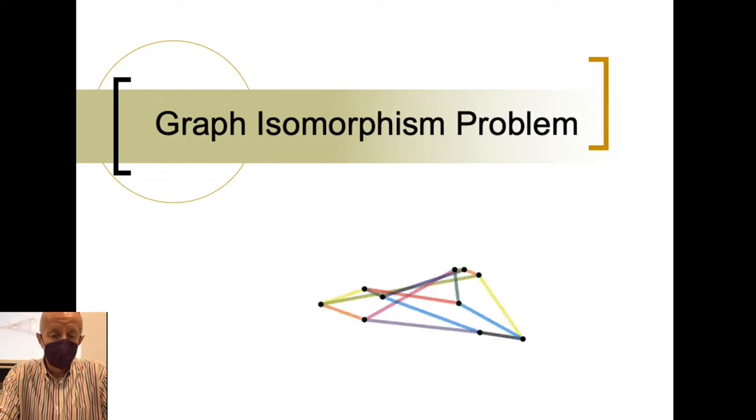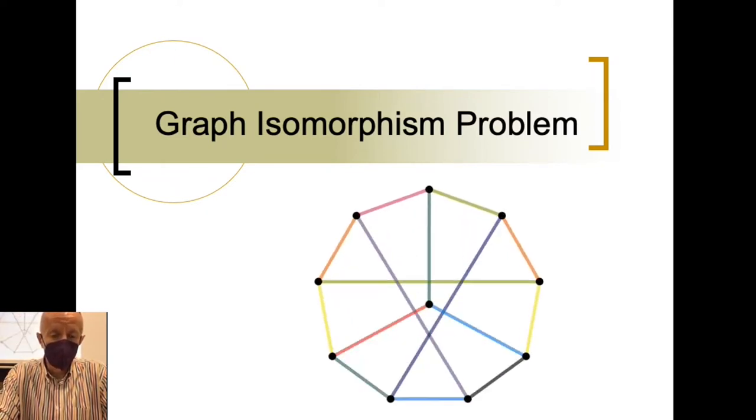This is a very well-known problem in mathematics. For example, we can see here on the screen another three graphs, eight nodes each, and all of them belong to the same automorphism group, since there are automorphisms on the set of edges on all of these graphs.